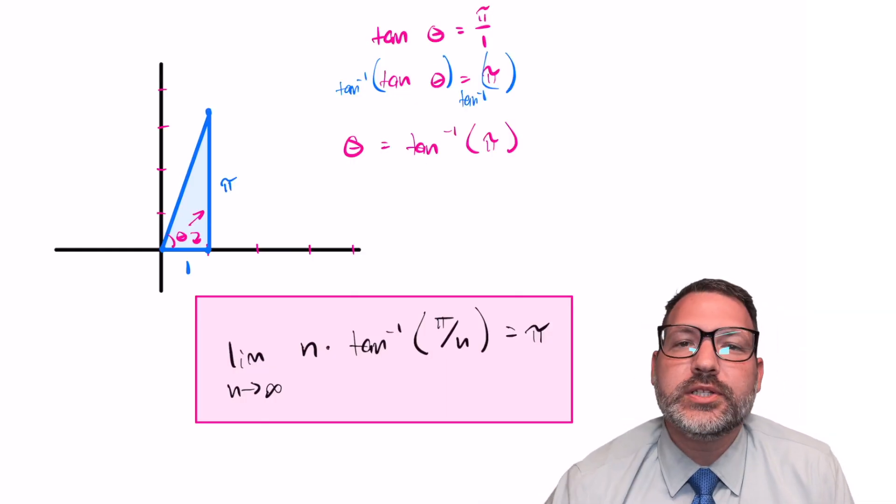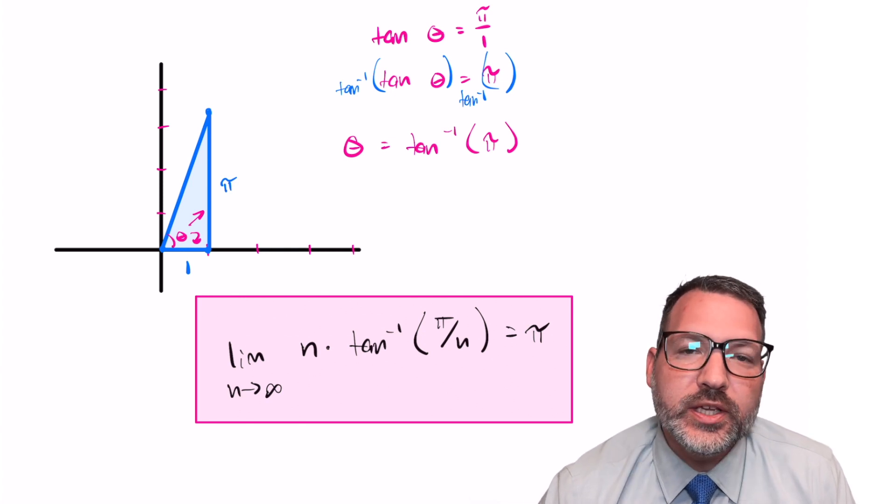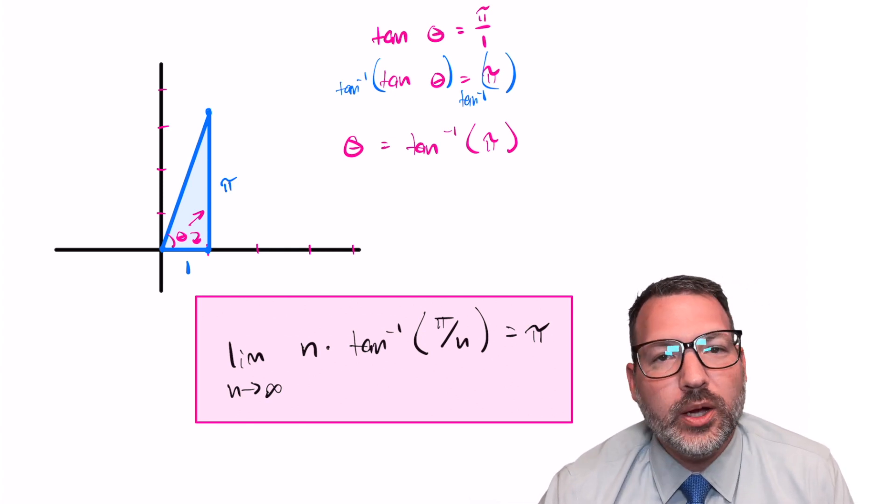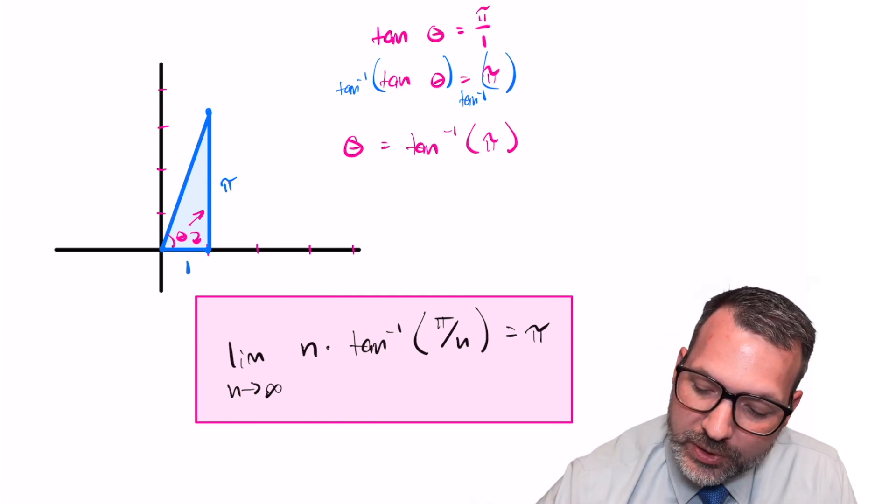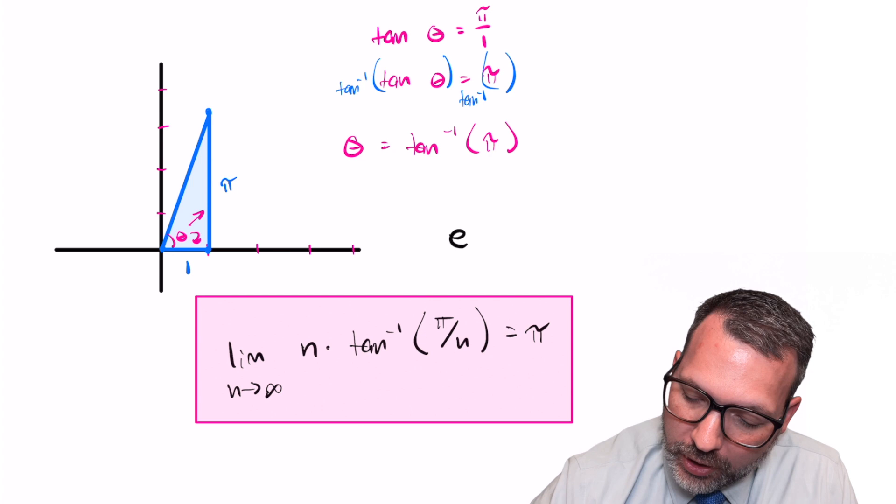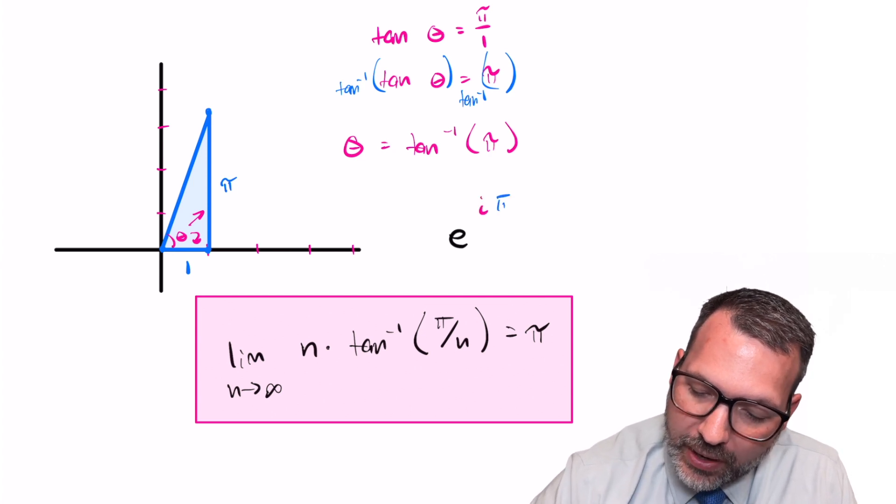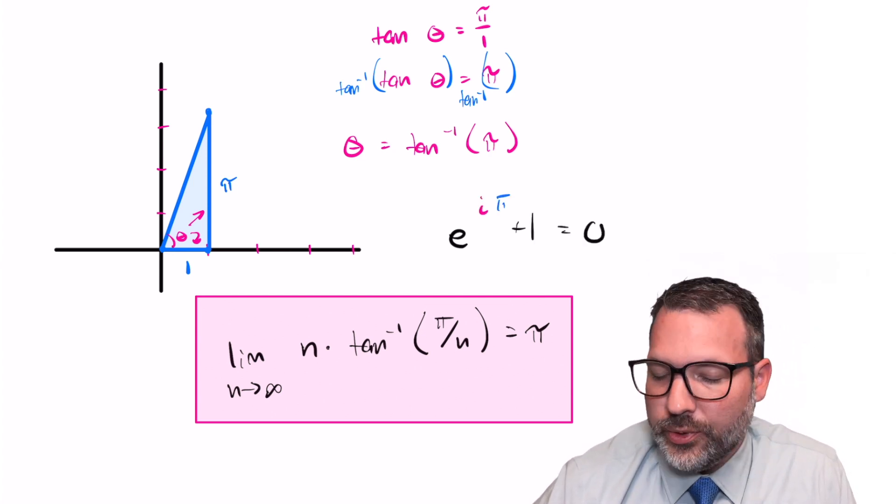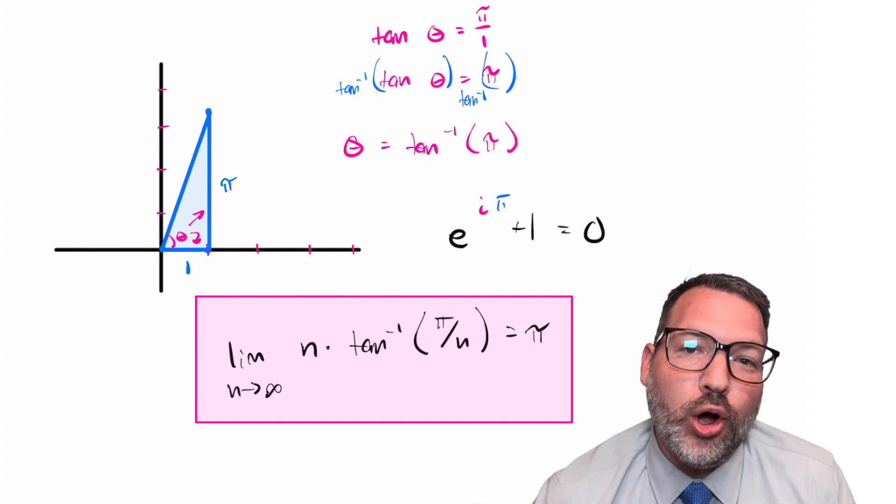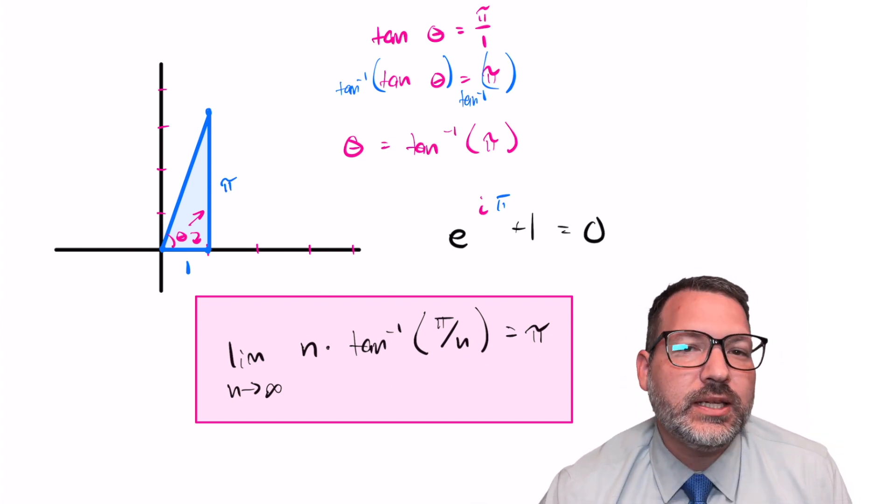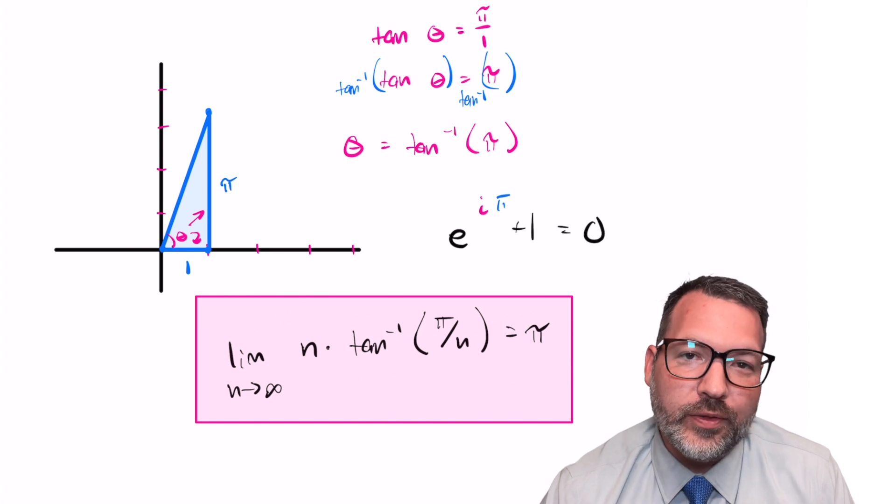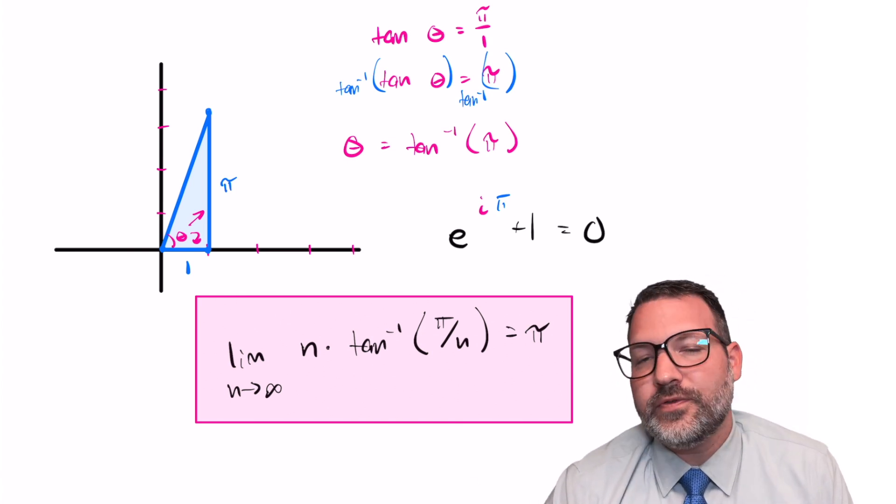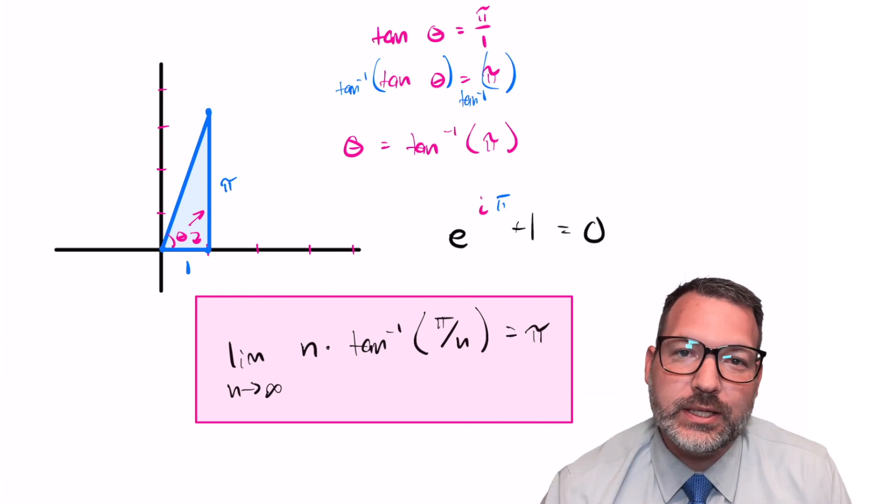So there you have it. We have demonstrated using L'Hopital's rule that this particular expression does approach a number. In fact, it approaches π, which is going to help us when we get to figuring out what on earth is going on with e to the iπ plus 1 equals 0, the most beautiful formula in all of mathematics. If you're interested in seeing that video and you're not already subscribed, go ahead and subscribe. That is coming later on this week. Like, do all the things to this video if it has been helpful, and I will see y'all next time.